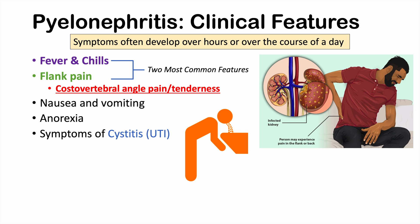We can also see symptoms of cystitis or a urinary tract infection, since most cases of acute pyelonephritis arise from an ascending UTI. These symptoms include urgency — when you feel you have to use the bathroom very quickly — increased frequency of urination, and dysuria, which is a burning sensation during urination.